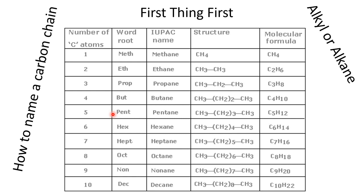This table shows you the names of chains with carbon atoms from 1 to 10. If there is only one carbon atom, it is meth-; as a parent chain it will be called methane, and as a branch it will be called methyl. Two carbons is eth-; parent chain ethane, branch ethyl. Carbon 3 uses prop-, carbon 4 uses but-, carbon 5 uses pent-, and carbon 6 uses hex-.